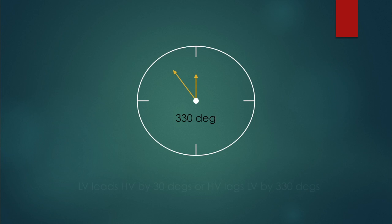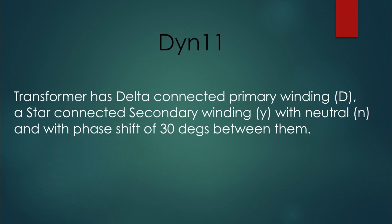We can say that LV winding leads the HV winding by 30 degrees or high voltage winding lags the low voltage winding by 330 degrees. So that is why 11 represents 30 degrees. So DYN11 indicates transformer has delta connected primary, star connected secondary winding with neutral and with phase shift of 30 degrees between them.